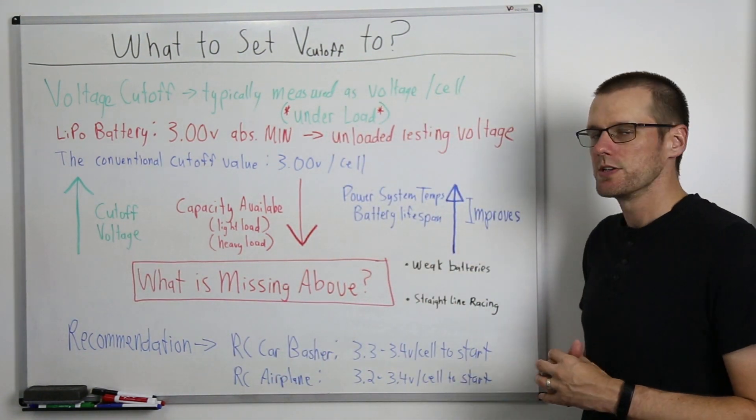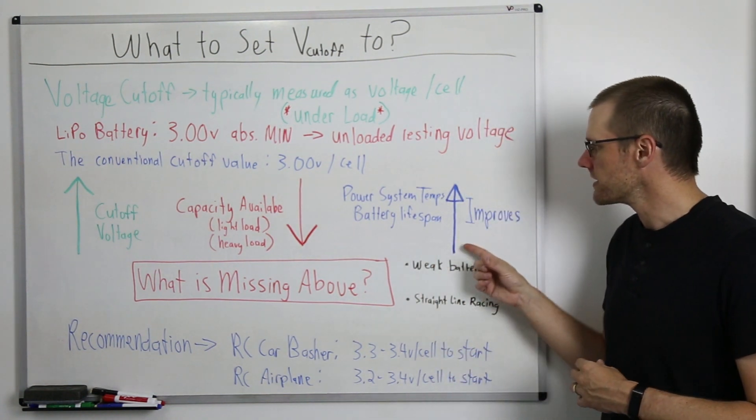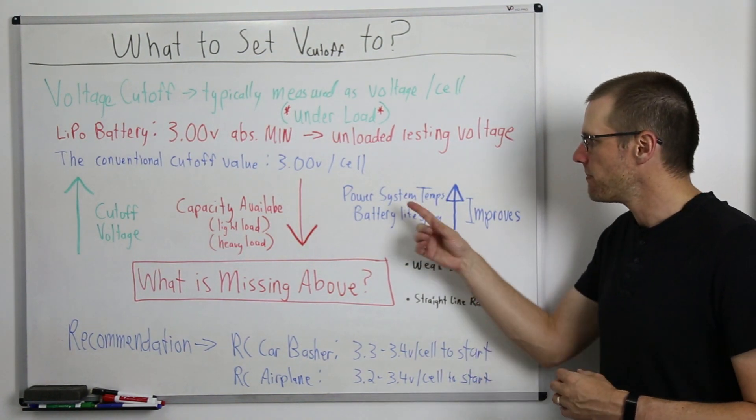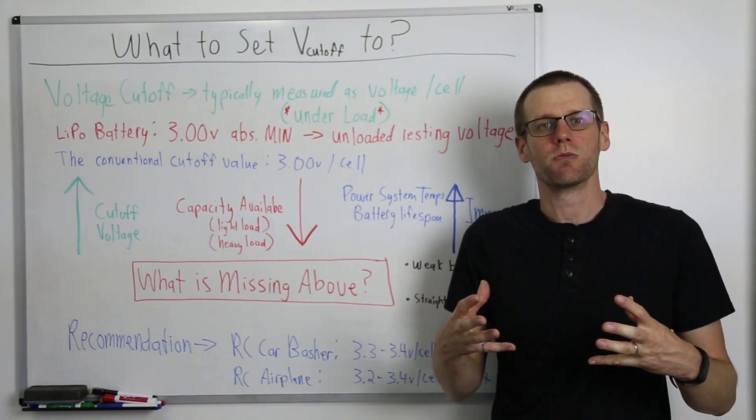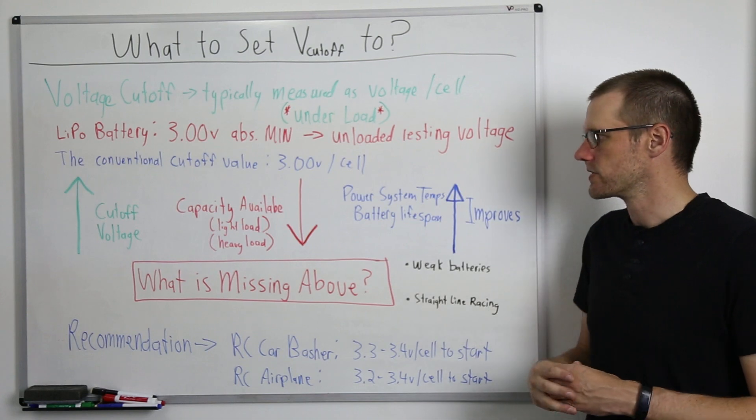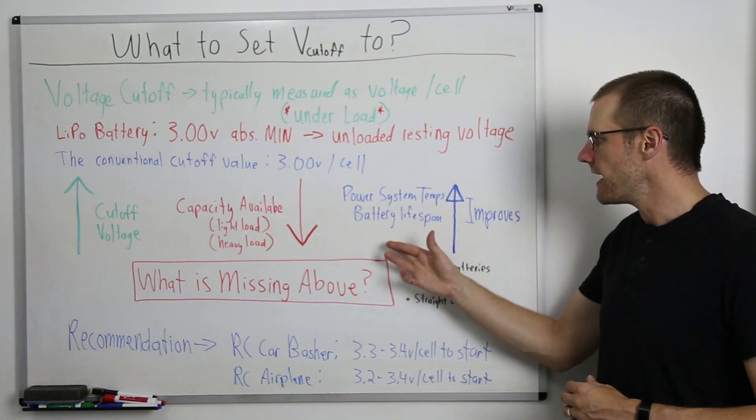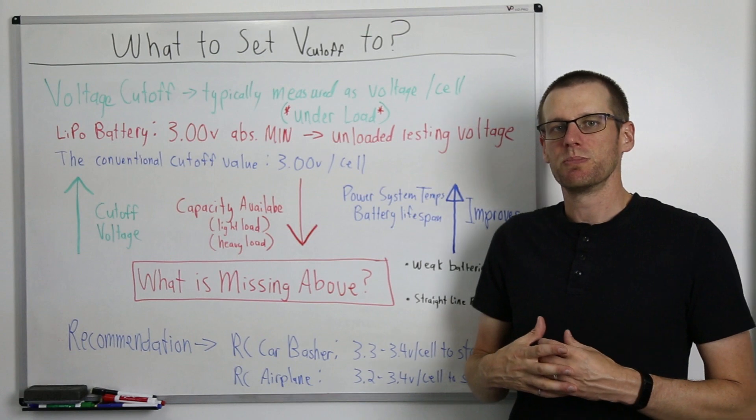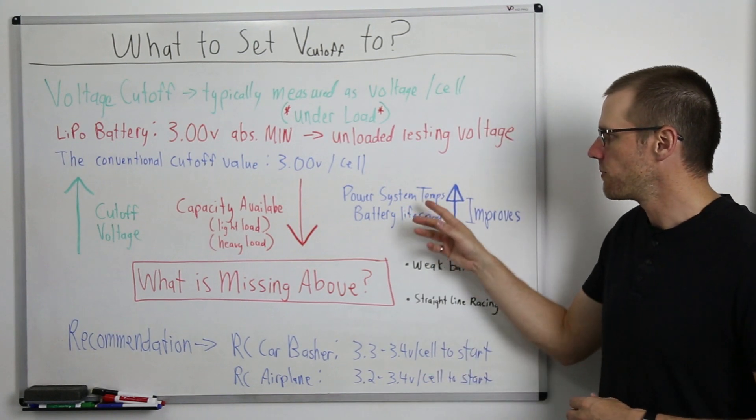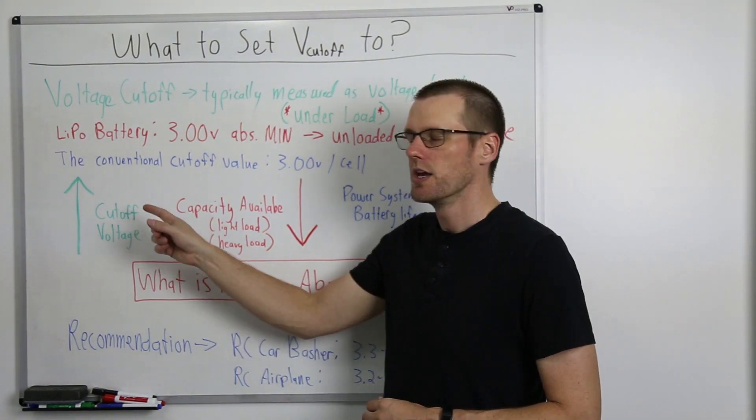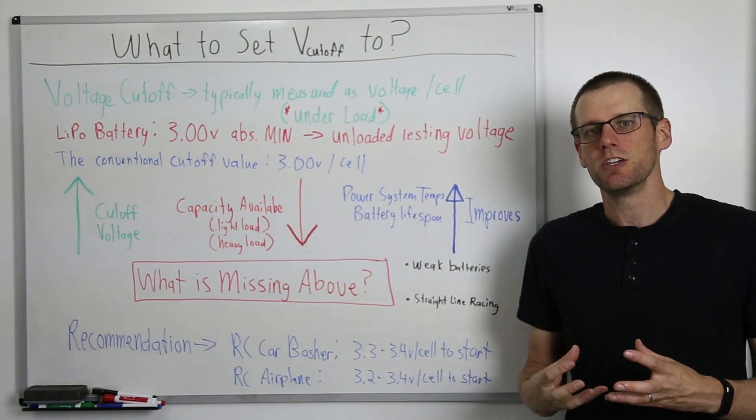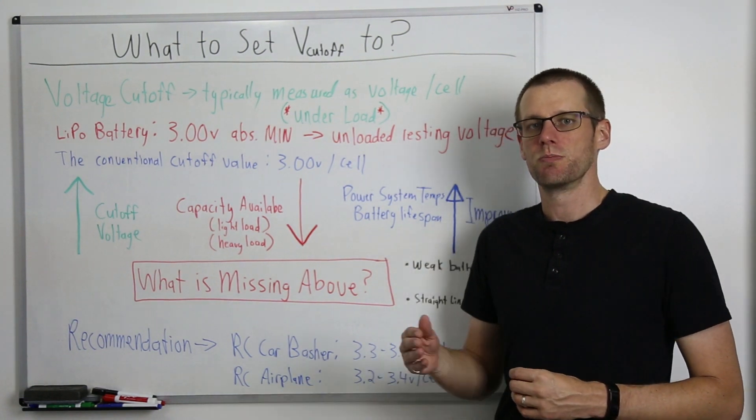Either way, you are going to experience less capacity available if you have a higher voltage cutoff. So now let's talk about some of the improvements that we get. So this arrow doesn't mean that it increases, we are just identifying that we get some sort of improvement. And power system temperatures, because we're going to have a reduced amount of run time within our power system, we're going to see better temperatures. Better yet, we're going to see better battery lifespan if we are able to increase the voltage cutoff, just in case we actually hit that voltage cutoff. So those are two primary reasons as to why you would want to go and increase that cutoff, where the one drawback is going to be the capacity that you have available within that battery pack is going to be reduced.